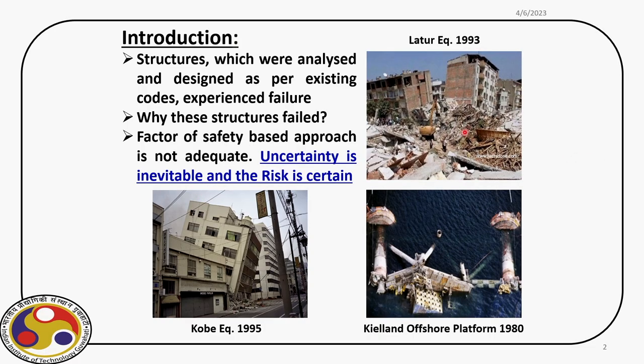A few examples are shown on the screen. The first one is the Latour earthquake in 1993, then the Kobe earthquake in 1995, and there are other examples of structural failures experienced in the offshore industry. All these structures were designed following certain guidelines. However, as they experienced their operating conditions, because of various reasons they experienced failure. This motivates us to investigate why these structures failed.